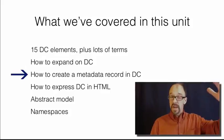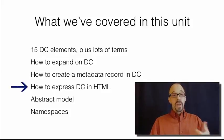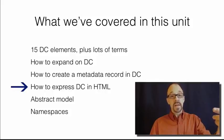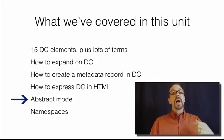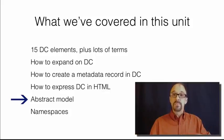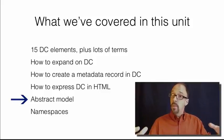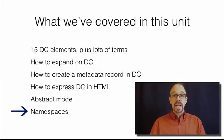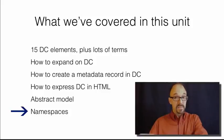We've looked at how to create a metadata record in Dublin Core that's composed of elements and values. We've looked at how to convert that metadata record into HTML using the meta tag, and we've spent some time pulling apart the abstract model, which is the model on which Dublin Core is based but is intended to be much broader than just Dublin Core. It's intended to be a model for all metadata schemas, and we've looked at how to formally declare the semantics of a metadata schema in a namespace.